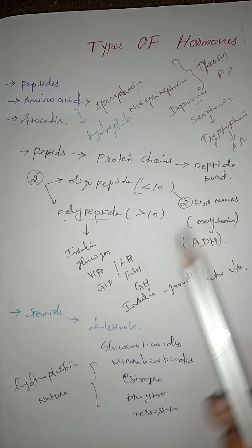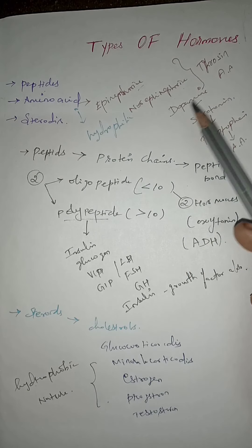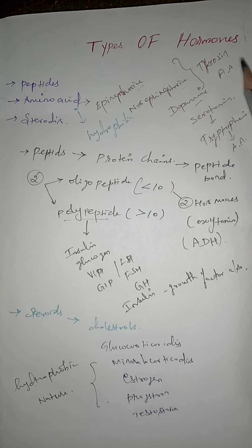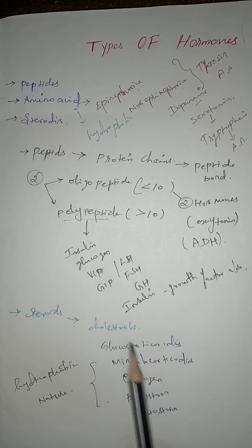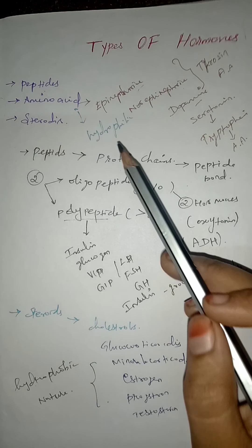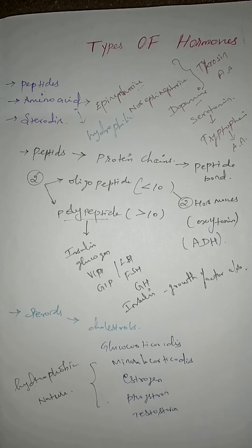Amino acid hormones include epinephrine, norepinephrine, dopamine, and serotonin. The first three are derived from tyrosine and serotonin is derived from tryptophan. Amino acid hormones are hydrophilic in nature. Steroid hormones are fully derived from cholesterol — examples include glucocorticoids, mineralocorticoids, estrogen, progesterone, and testosterone — and are hydrophobic in nature. Thanks for watching, please subscribe for more details about Medical Concept.